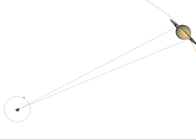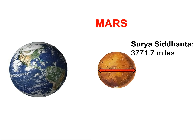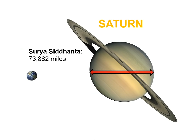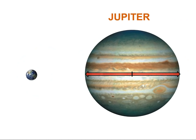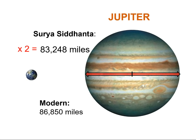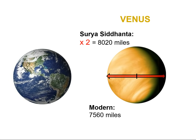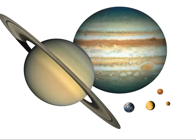Comparing the Surya Siddhanta to modern calculations: if the figure for Jupiter is doubled, it fits very well — so perhaps the Surya Siddhanta was referring to its radius instead of its diameter. This could be down to the poetic nature of the verse, or simply human error. The figures are very similar, all over 83,000 miles across. The same radius-to-diameter formula also applies to Venus. Putting all the planets together for a size comparison — including the moon — gives us one big happy family.